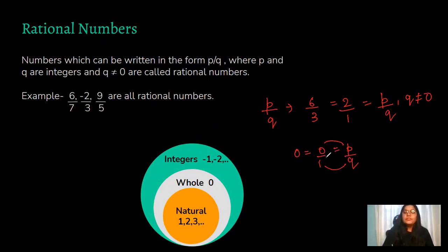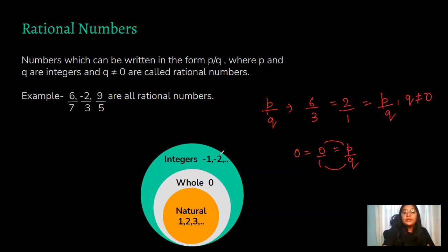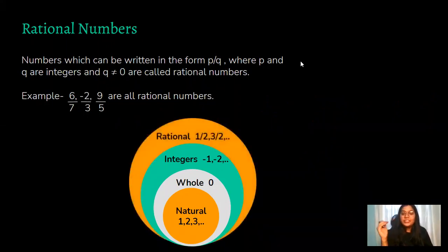Since we talked about natural numbers, whole numbers, and integers, rational numbers contain all of these. Rational number is a bigger set — it contains integers, whole numbers, and natural numbers as well, just as we saw integers contained whole numbers and natural numbers.